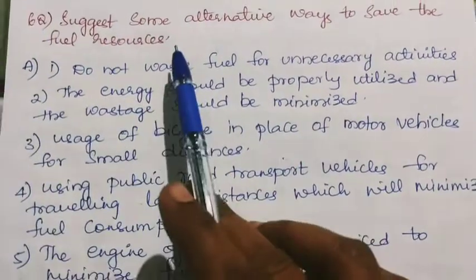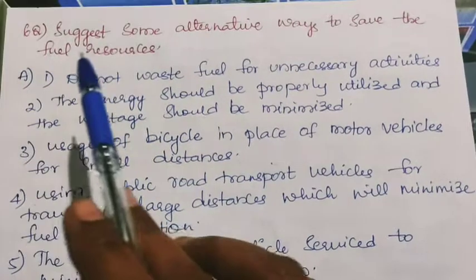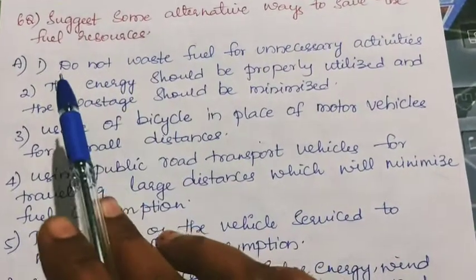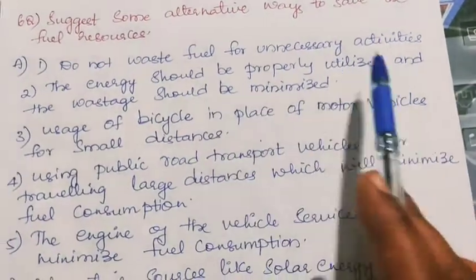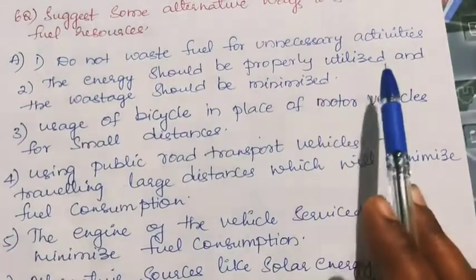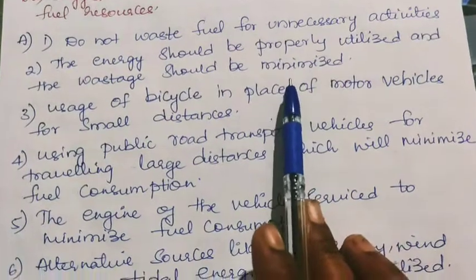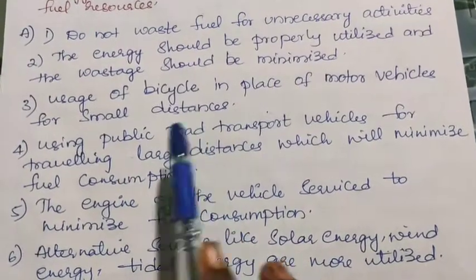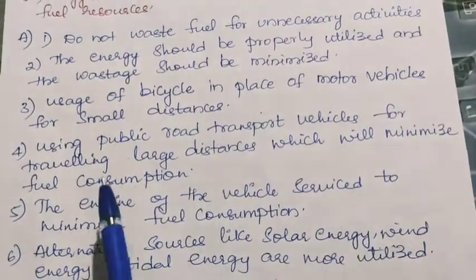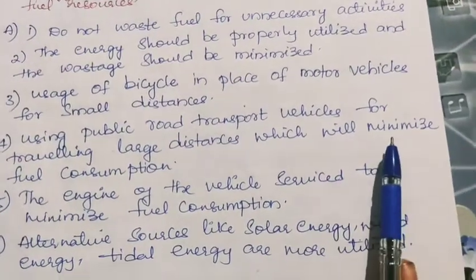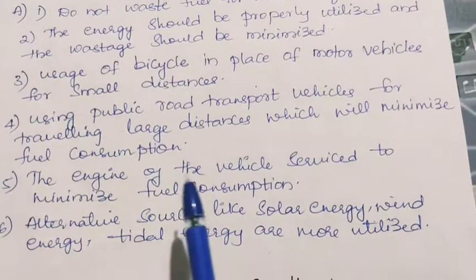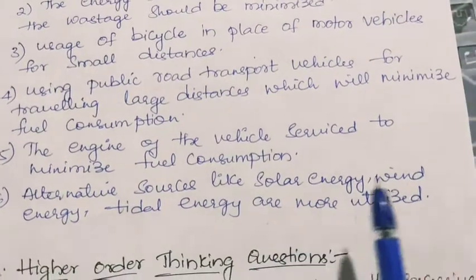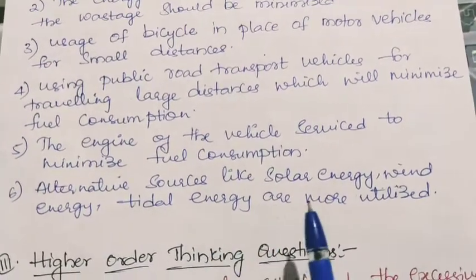Sixth question: suggest some alternative ways to save fuel resources. Do not waste fuel for unnecessary activities — energy should be properly utilized and wastage minimized. Use a bicycle instead of motor vehicles for small distances. Use public transport for large distances to minimize fuel consumption. Service the engine of the vehicle to minimize fuel consumption. Alternative sources like solar energy, wind energy, and tidal energy should be more widely utilized.